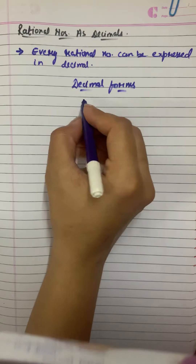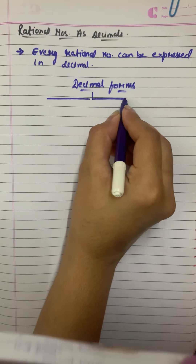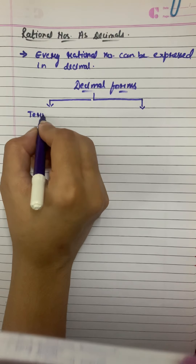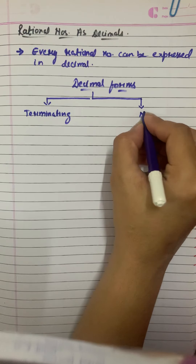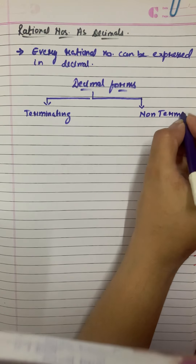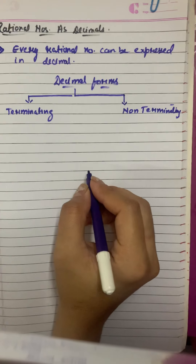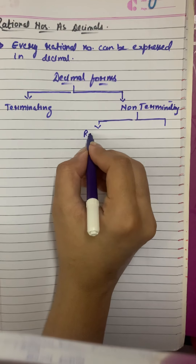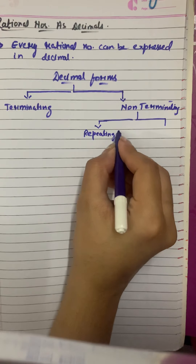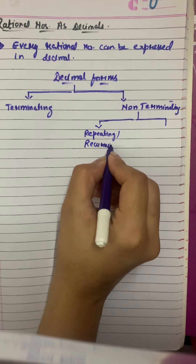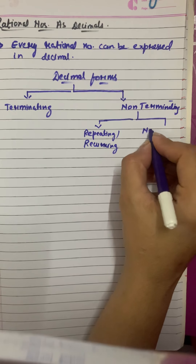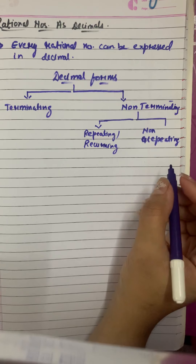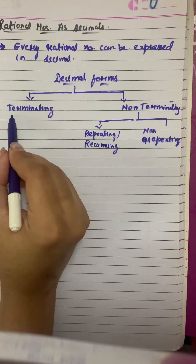There are two types of decimal forms. It has been divided into two categories: one is terminating decimals and the other is non-terminating decimals. Non-terminating decimals are further divided into two sub-categories: repeating decimals and non-repeating decimals. To begin our discussion, I will first talk about the terminating decimals form.